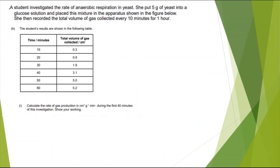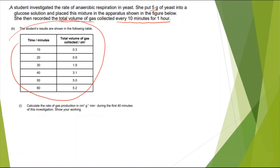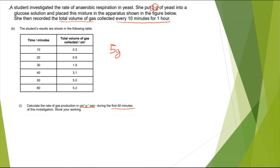Moving on to the final example, a little bit trickier. A student investigated the rate of anaerobic respiration in yeast — she put five grams of yeast into a glucose solution and placed this mixture in the apparatus shown in the figure. She recorded the total volume of gas collected every 10 minutes for one hour, and the results are shown in a table. The question asks to calculate the rate of gas production in centimetres cubed per gram to the power of minus 1 per minute to the power of minus 1, during the first 40 minutes. So I have five grams from the information, and I need to work with the first 40 minutes.